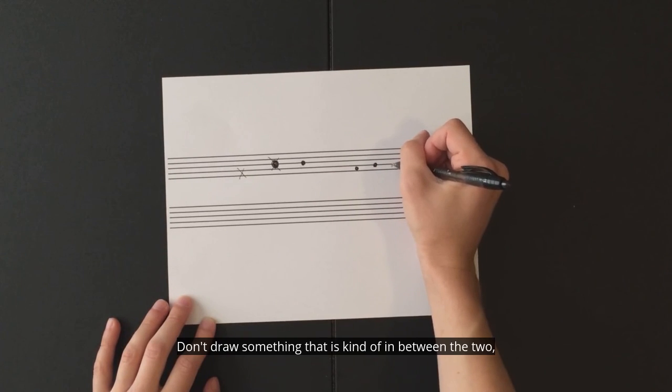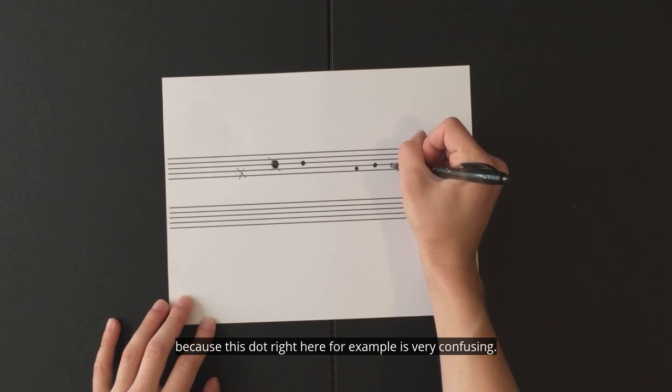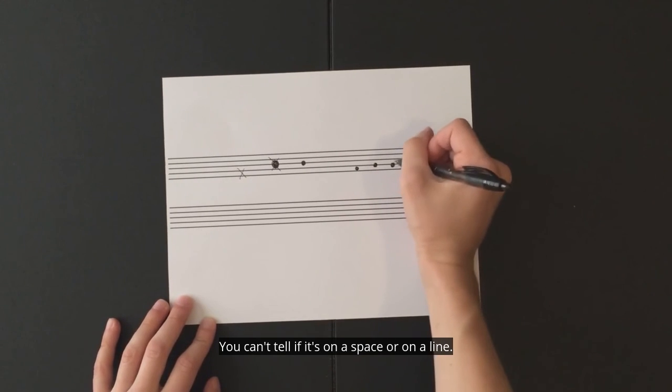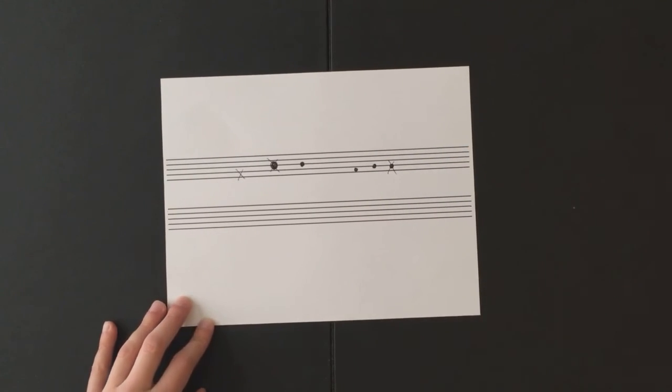Don't draw something that is kind of in between the two because this dot right here, for example, is very confusing. You can't tell if it's on a space or on a line.